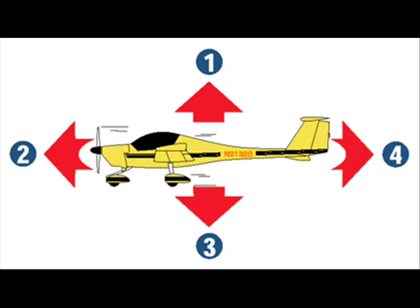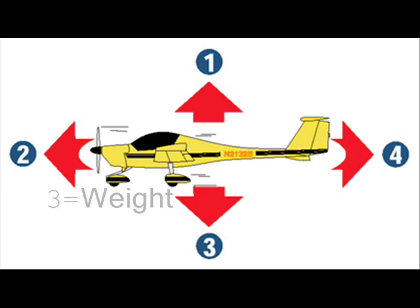Weight. Weight is the downward acting force. It's the one force pilots control to some extent by choosing how they load the airplane. With the exception of fuel burn, the airplane's actual weight is difficult to change in flight. Once airborne, you should not be burning cargo or acquiring extra passengers. Unexpected discharge of passengers while in flight is a violation of some FAA rule, so please don't do it. In unaccelerated flight, when the airplane's speed and direction are constant, the opposing forces of lift and weight are in balance.